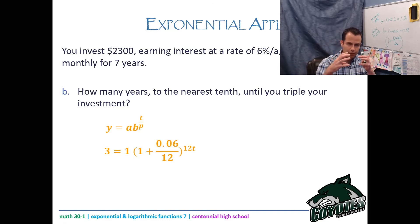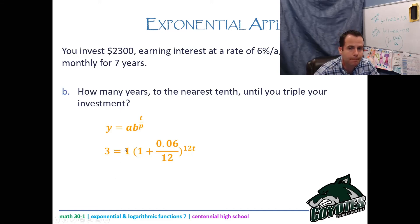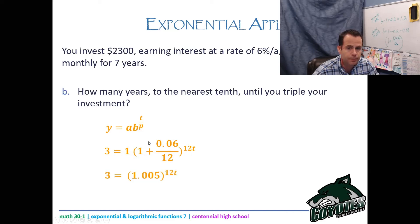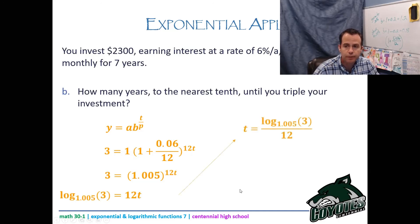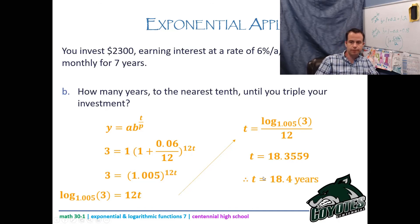Switching to log form gives log base 1.005 of 3 = 12t. Divide both sides by 12 to isolate t. The result is 18.3559, so to the nearest tenth of a year it takes 18.4 years to triple the investment.